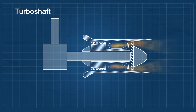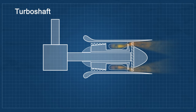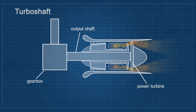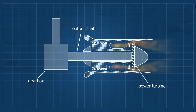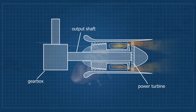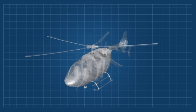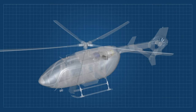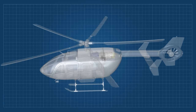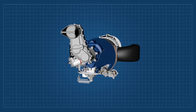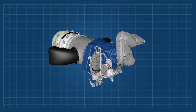The turboshaft engine is similar to the turboprop, but it is connected to a big shaft and is normally used for helicopters. The workings of the whole system are practically the same. It can also be used for military tanks and even boats.